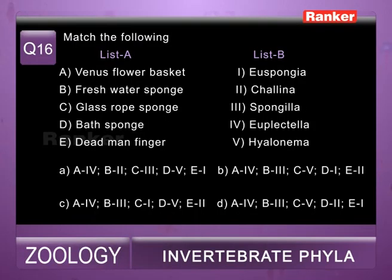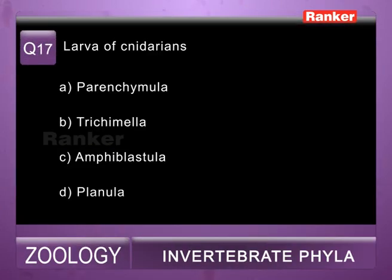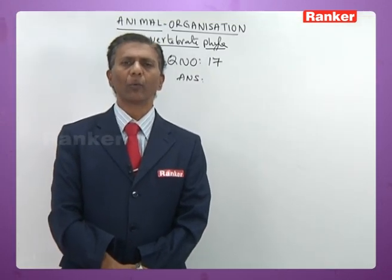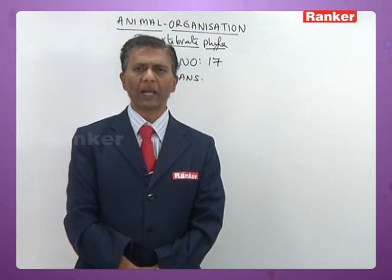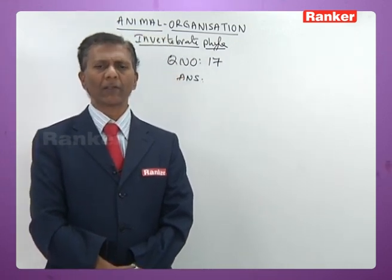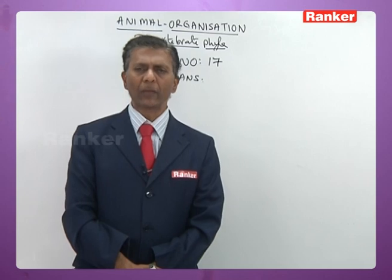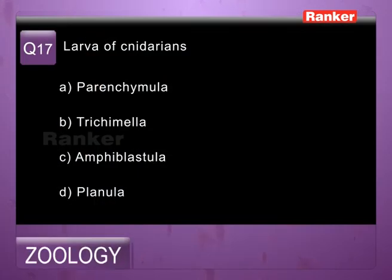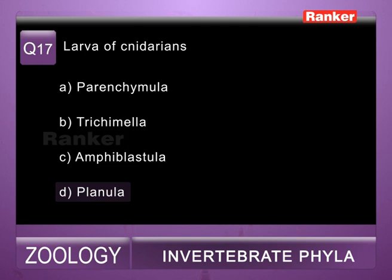Question seventeen: larva of cnidarians — a) parenchymula, b) trichimella, c) amphiblastula, d) planula. The first three larvae belong to Porifera. Planula is the characteristic larva of cnidarians. So seventeenth question correct answer is d) planula.